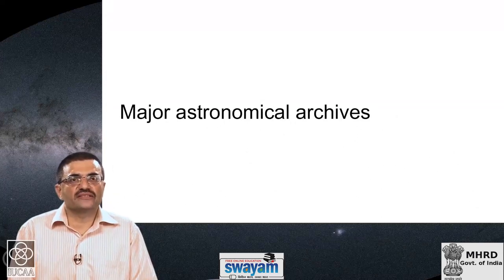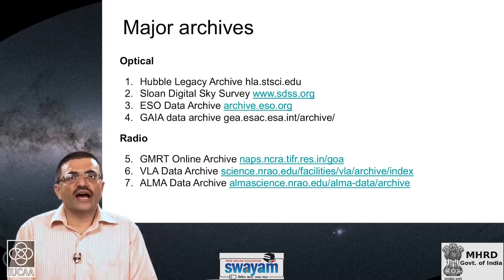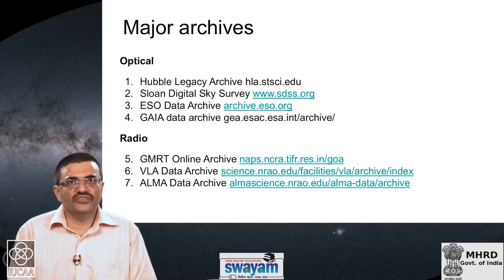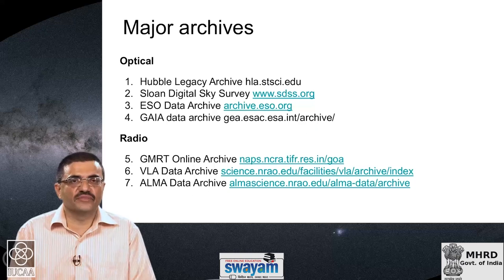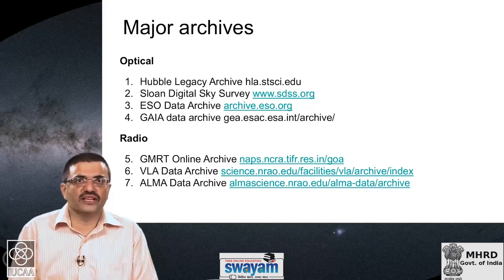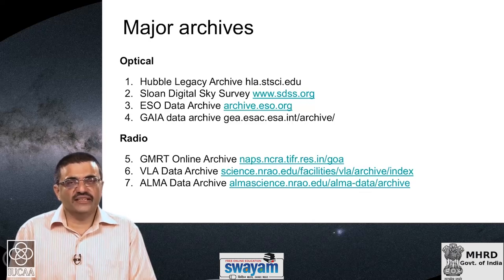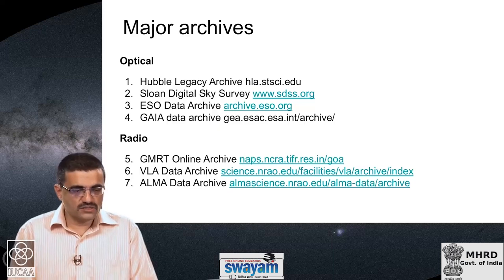Let us now look at some of the major astronomical archives that exist. Large archives are found at all wavelengths and there are a very large number of them. I found it difficult to shortlist a few, because simply listing all of them would not have been very useful. So I have chosen a few archives at optical, radio, and X-ray wavelengths which I feel are useful to a large community. Let us look at some of the major archives in optical astronomy.